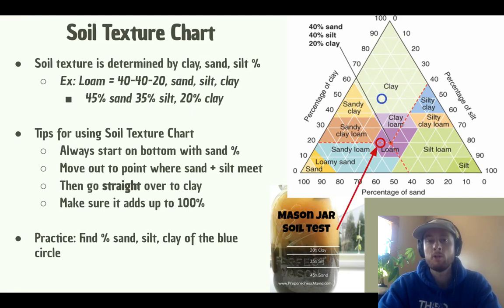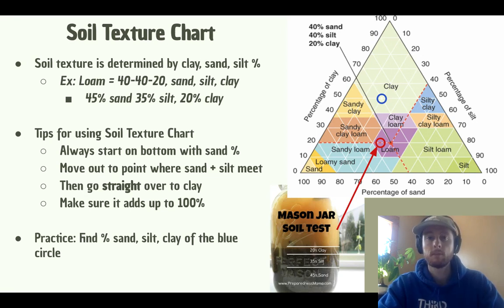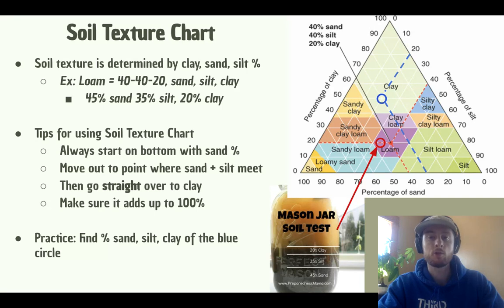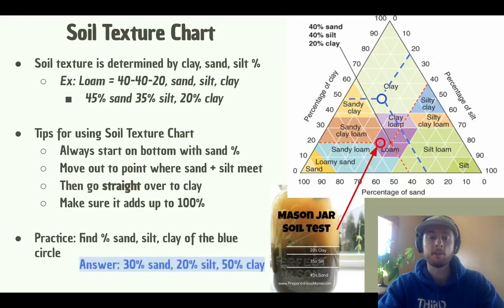Now practice by trying to find the percentage of sand, silt, and clay of the blue circle on the screen. Starting at the sand, we can see that this is 30% sand. Remember, we go out to the percentage of silt on a diagonal, which would be 20%. Then we go straight over to find the percentage of clay — that's 50%. So we have 30% sand, 20% silt, 50% clay.